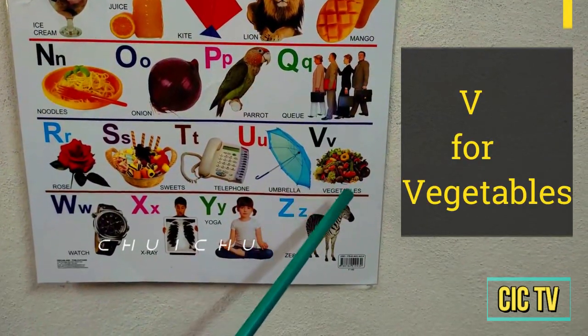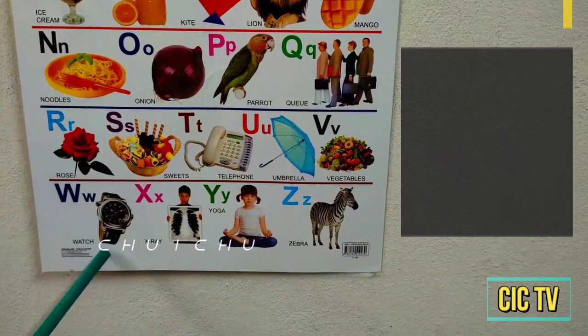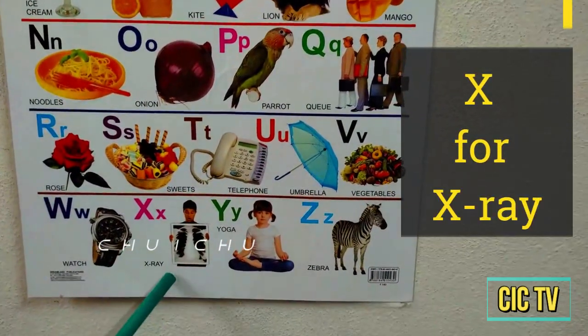V for vegetables, W for watch, X for x-ray.